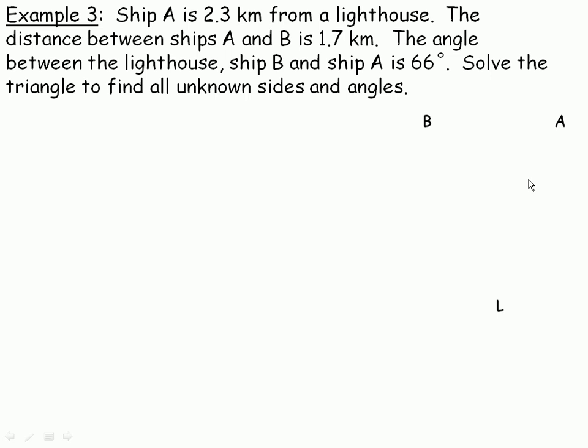So it looks like this. We've got a lighthouse and ships A and B. Drawing the triangle, we're told in the first sentence that this distance from ship A to the lighthouse is 2.3, and the distance between them is 1.7. Now it says the angle between the lighthouse, ship B, and ship A is 66 degrees. So that means this is 66.